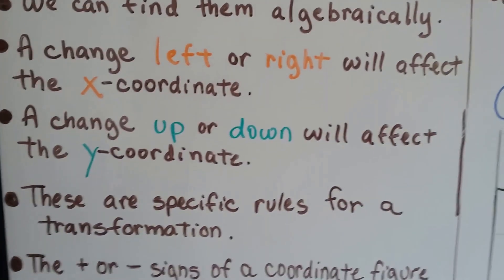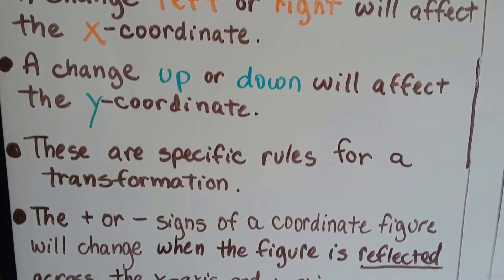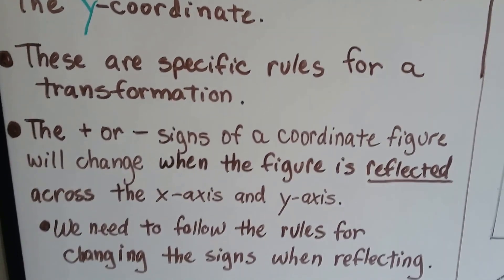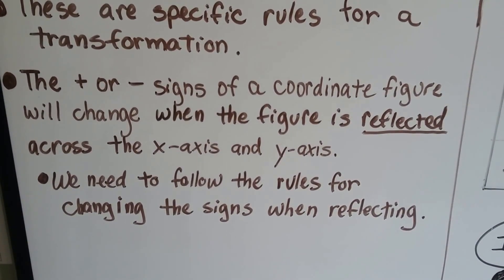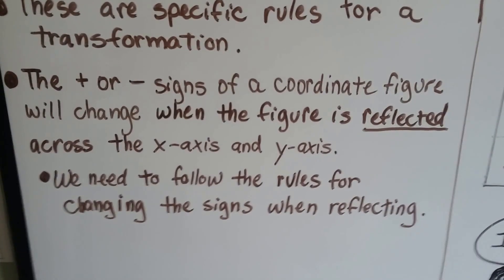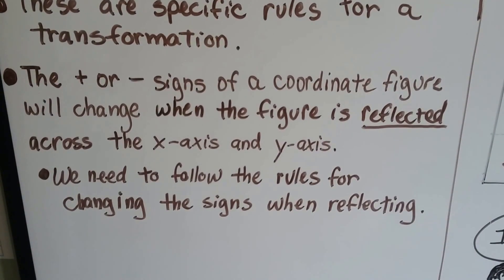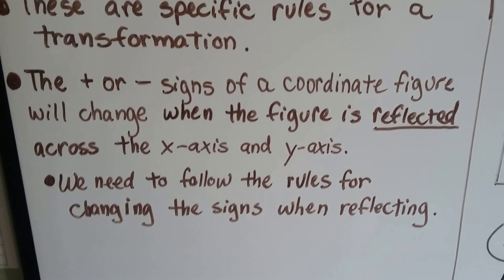A change left or right is going to affect the x-coordinate, and a change up or down will affect the y-coordinate. These are specific rules for a transformation. The positive or negative signs of a coordinate figure will change when the figure is reflected across the x-axis or y-axis. We need to follow the rules for changing the signs when reflecting.